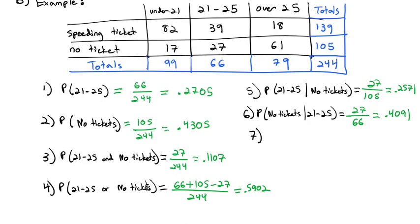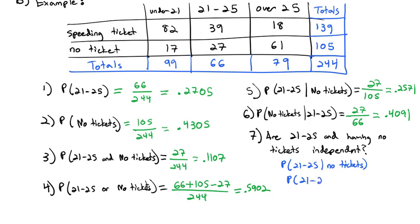One more thing I want to look at, though, is we have this vocabulary word from our previous video of independence. So I want to know, are being 21 to 25 and having no tickets independent? Does that mean being 21 to 25 has no impact on whether or not you had a ticket in the past year? Well, we talked about there being three different formulas we could use in order to show this. One of those three formulas says that a given probability should not change the probability if they are, in fact, independent. In other words, the probability they're being 21 to 25 given they have no tickets should be the same as the probability of just being 21 to 25 if they're independent. Because the tickets shouldn't impact that at all.